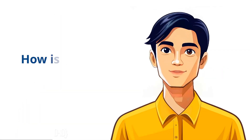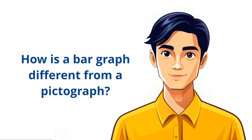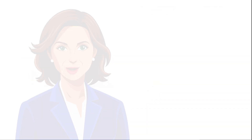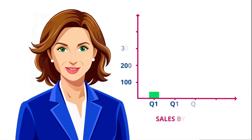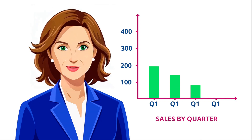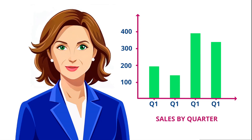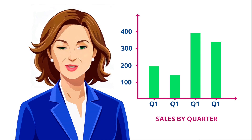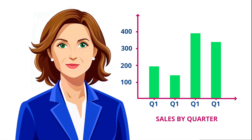Next up, bar graphs. How is a bar graph different from a pictograph? A bar graph uses bars to represent data, with each bar showing the value of a category. Unlike pictographs, bar graphs use the height or length of bars to indicate quantities.